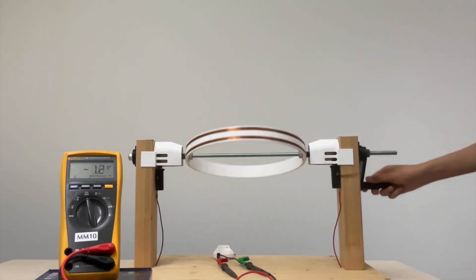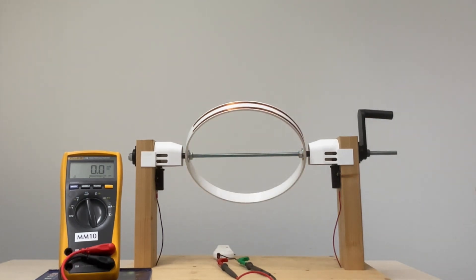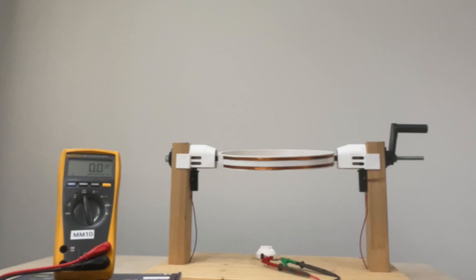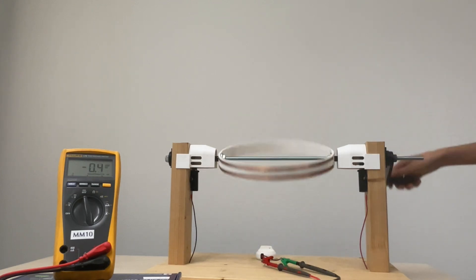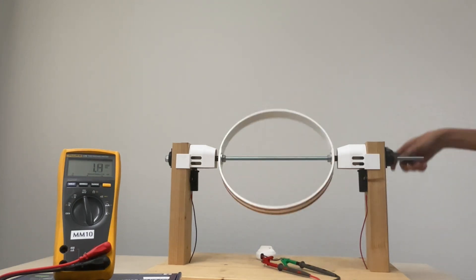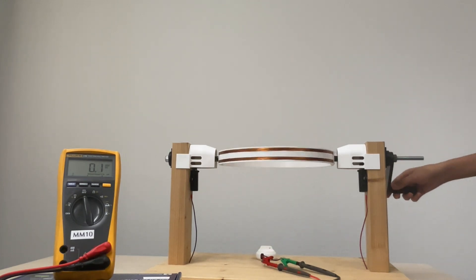It's the varying flux that induces an electric potential, which then causes a current to flow in the loop. As you can see, as I rotate the coil faster, the rate at which the magnetic flux changes is also increasing. This change in flux is directly linked to the voltage being generated, which you can see on the multimeter.